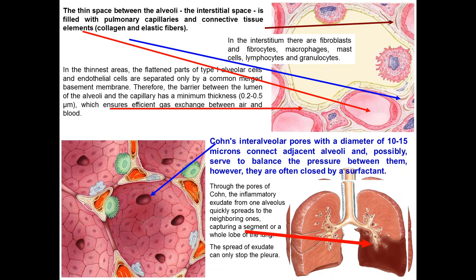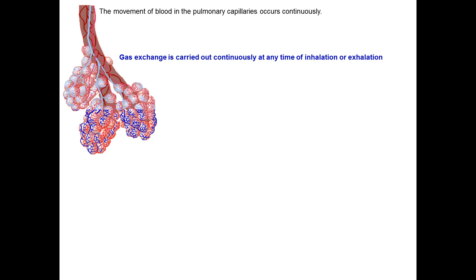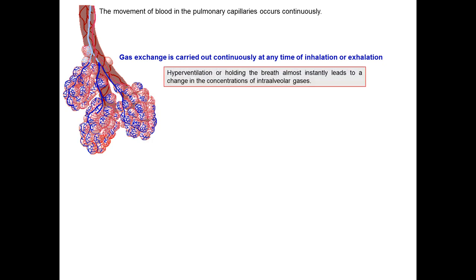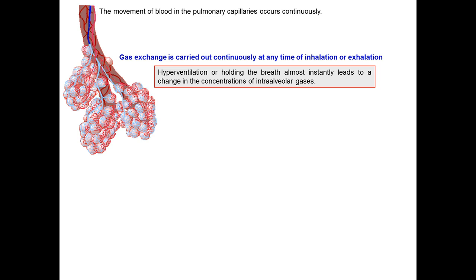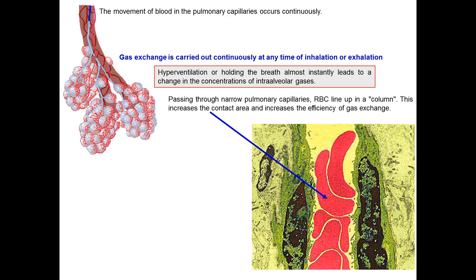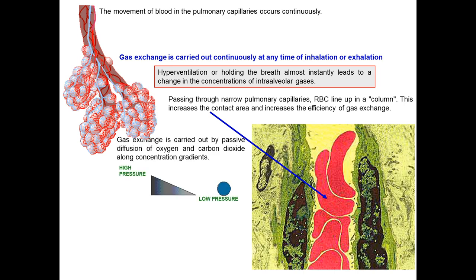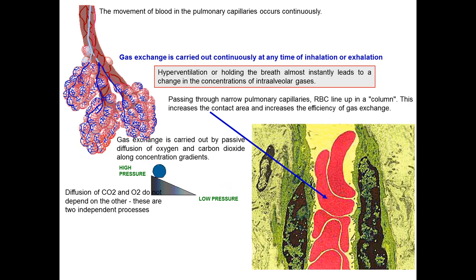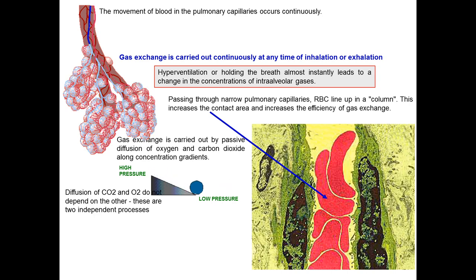Through these pores, in pathological conditions, inflammatory exudate from the alveoli can quickly spread to neighboring ones, capturing a segment or a whole lobe of the lungs. The spread of exudate can only be stopped by the pleura. Movement of blood in pulmonary capillaries occurs continuously; gas exchange is carried out at any time of inhalation or exhalation. Hyperventilation or holding the breath almost instantly leads to a change in the concentration of intra-alveolar gases. Passing through narrow pulmonary capillaries, red blood cells line up in a column, increasing the contact area and the efficiency of gas exchange.